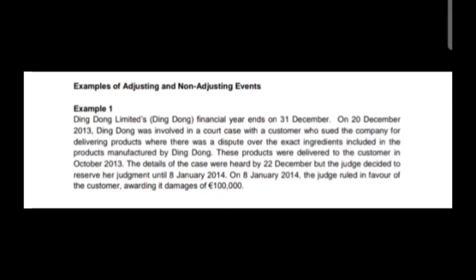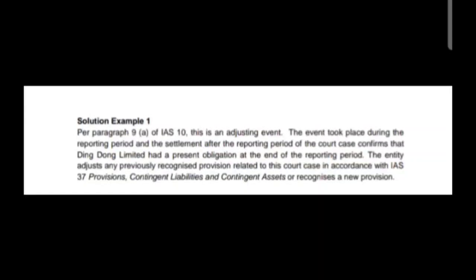The judge gave the judgment after the reporting period but before the financial statements are authorized for issue, which normally takes around two and a half months until the financial statements are audited and authorized by the directors. Solution: The event took place during the reporting period, and the settlement after the reporting period of the court case confirms that the company had a present obligation at year end. The entity adjusts any previously recognized provision related to the court case in accordance with IAS 37 (Provisions, Contingent Liabilities and Contingent Assets) or recognizes a new provision. Therefore the company has to adjust £100,000. This is an adjusting event.